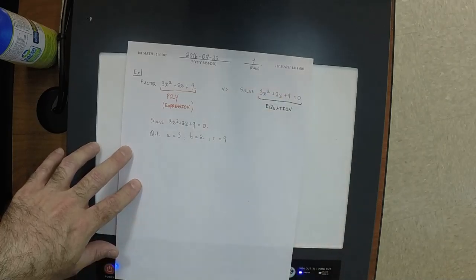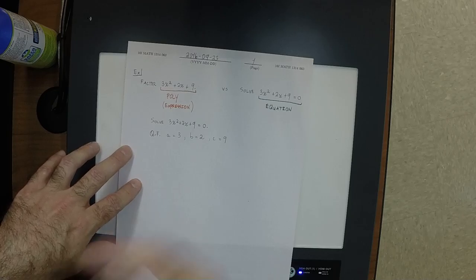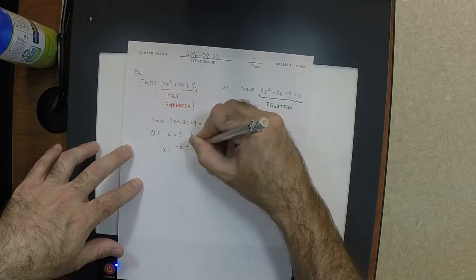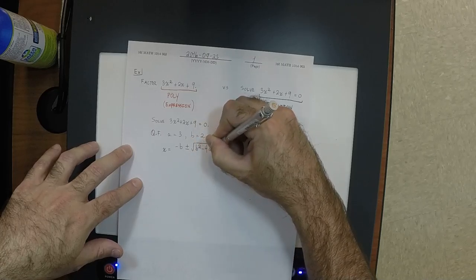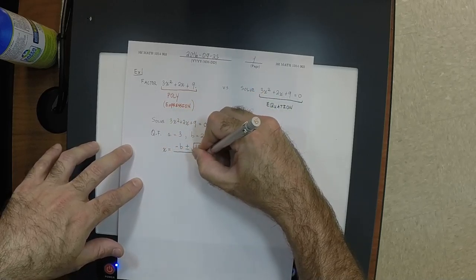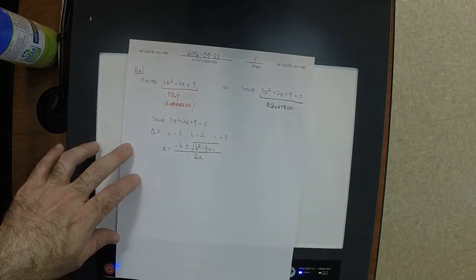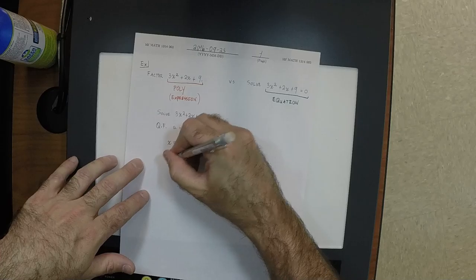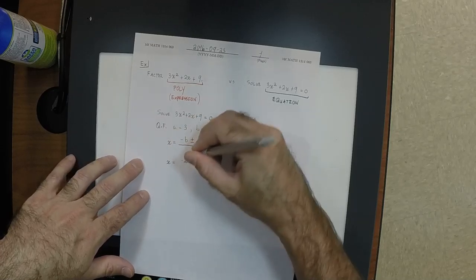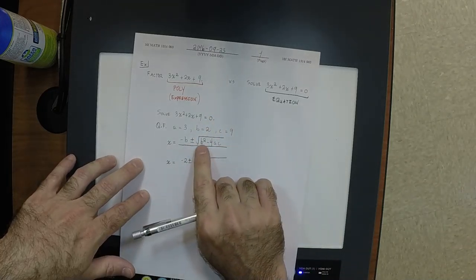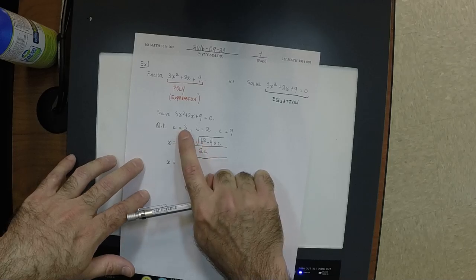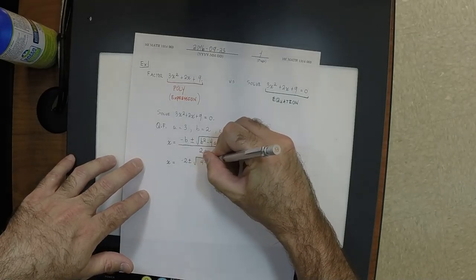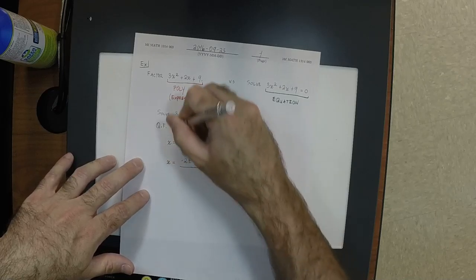Very good. So the formula is: negative B plus or minus square root of B squared minus 4AC, all over 2A. That would be negative 2 plus or minus square root of 4 minus 4 times 3 times 9. 4 times 3 times 9 is 108. So this would be negative 2 plus or minus square root of (4 minus 108), over 2 times 3, which is 6.